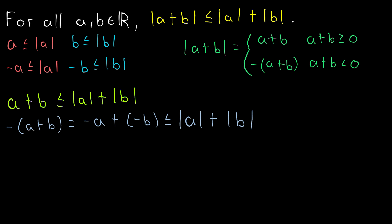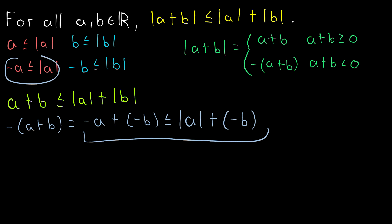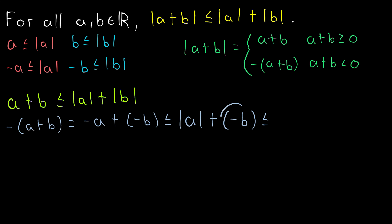We could have also done this in smaller steps. If that makes you more comfortable, we could replace negative a with the absolute value of a and leave negative b unchanged at first. This inequality is certainly true since we replaced negative a with a number that's greater than or equal to it. And then in a second separate step, we could replace negative b with its absolute value by the same reasoning.